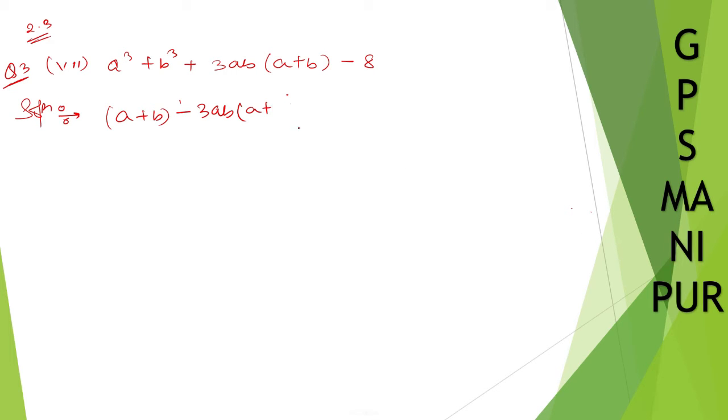So, a+b, this is the formula. Plus 3ab(a+b) - 8, I can write down as 2³. So, 3ab(a+b), this can be cancel, one is minus, another is plus.